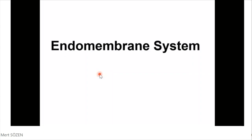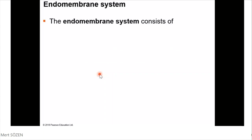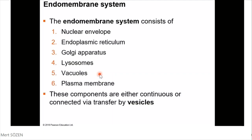The next organelles are grouped as the endomembrane system. The endomembrane system regulates protein traffic and performs metabolic functions in the cell. The endomembrane system consists of the nuclear envelope, endoplasmic reticulum, Golgi apparatus, lysosomes, vacuoles, and plasma membrane. These components are either continuous or connected via transfer by vesicles.